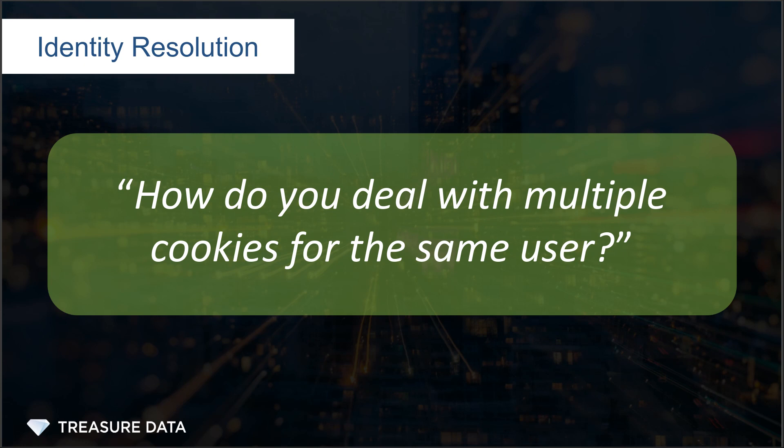When someone is identifying themselves, it could simply be entering an email address, it could be that they've logged in, they could have clicked on a link from an email, or any other way to determine who the user is. And if a user doesn't identify themselves, then that user will be treated as an anonymous user until they do. And that cookie will then be associated with the user record.